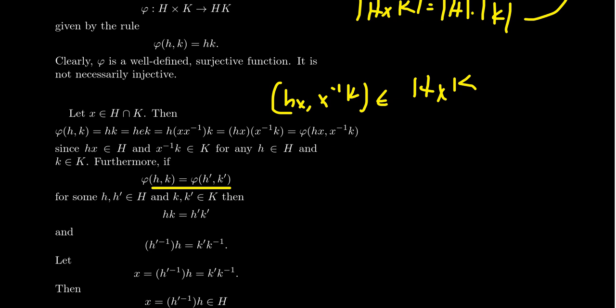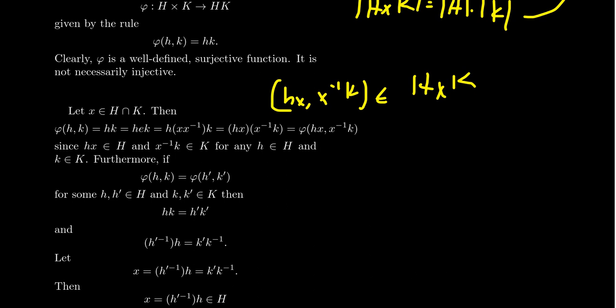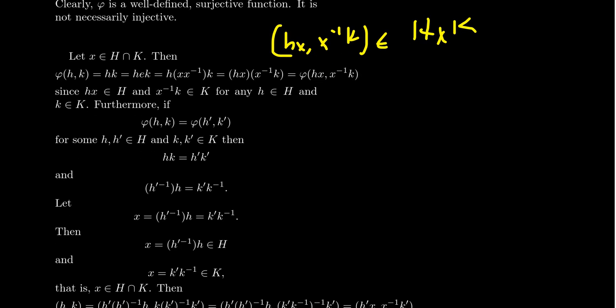So let's go in that direction. Suppose that the image of two ordered pairs, (h, k) and (h prime, k prime) are the same. That would mean the product h times k and h prime times k prime is equal to each other if their images are the same.